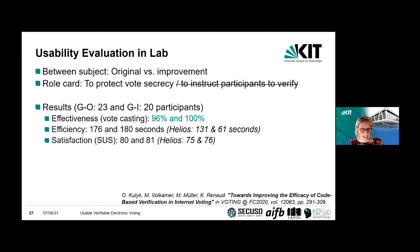The results show that almost everyone could cast the vote. Those who could not thought the return code did not match, although there was no manipulation — they thought there was a problem when there actually wasn't. Regarding efficiency and satisfaction: the Swiss-based integrated approach takes slightly longer than the Helios one, but we're talking about seconds, and the SUS values are similar. That's again why I think we should really focus on effectiveness.